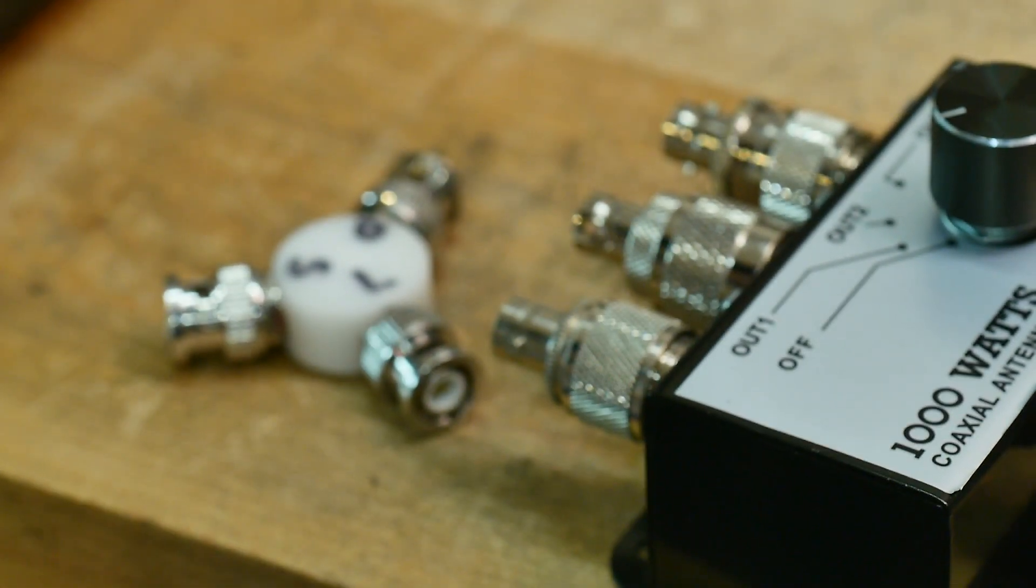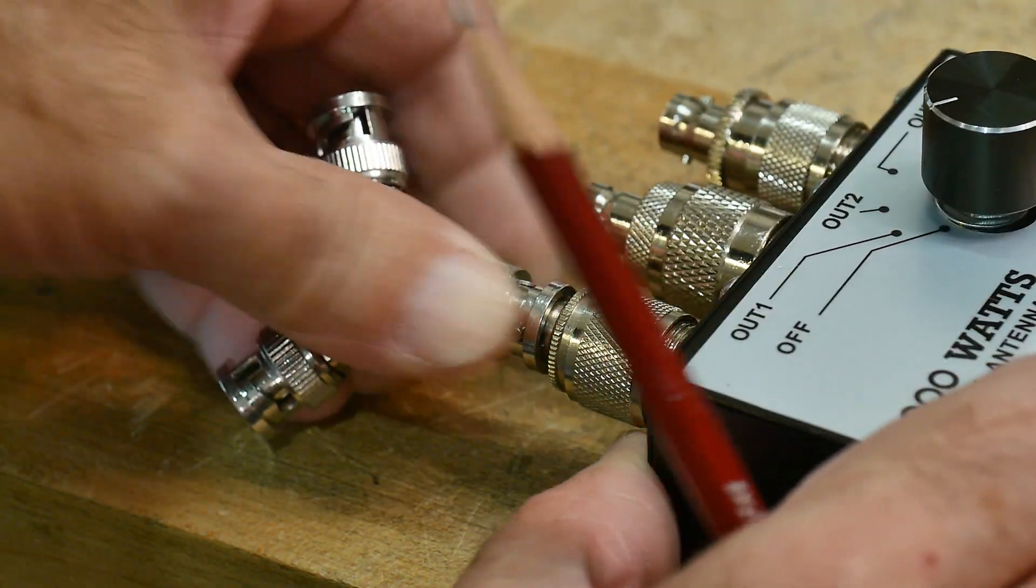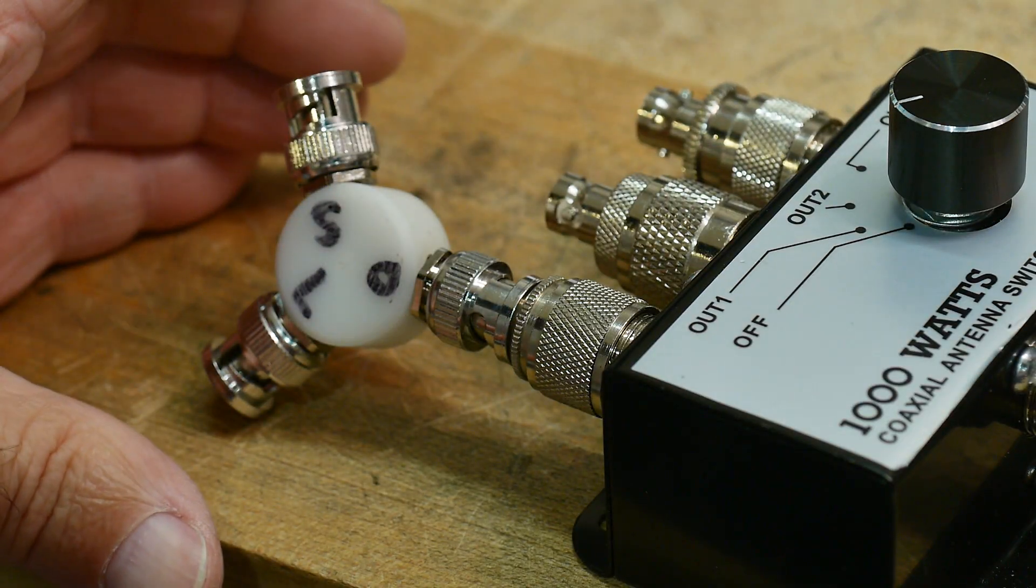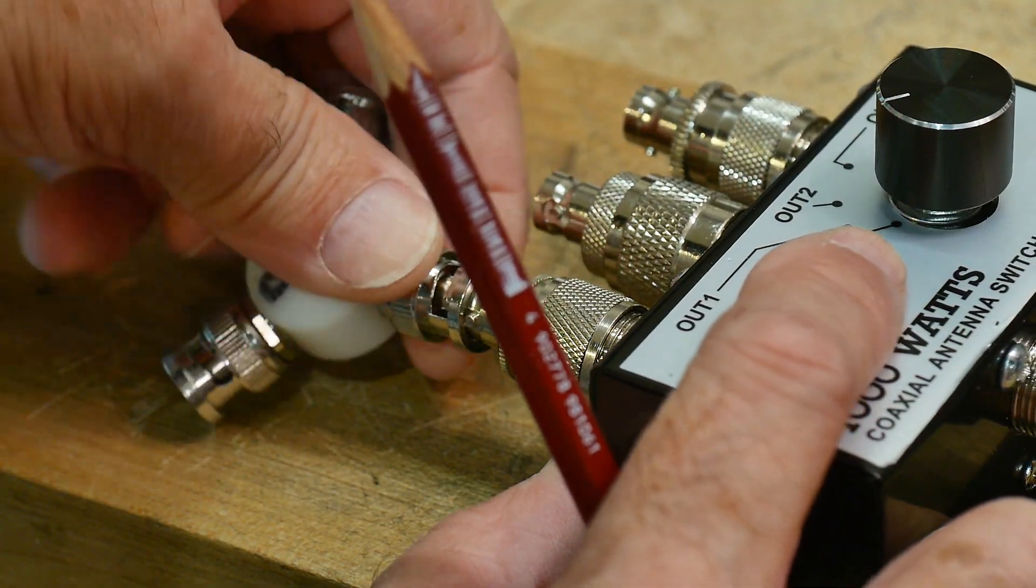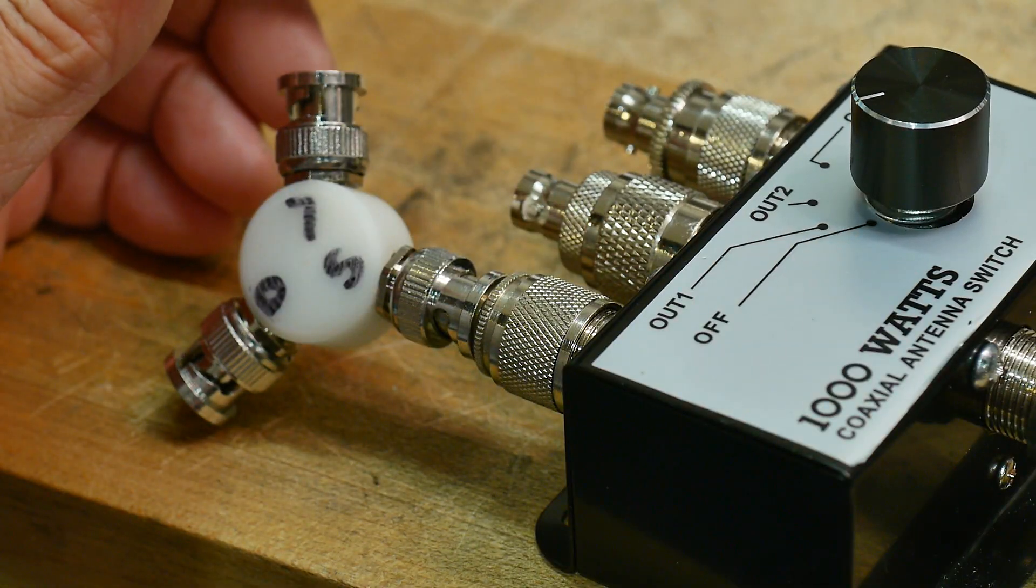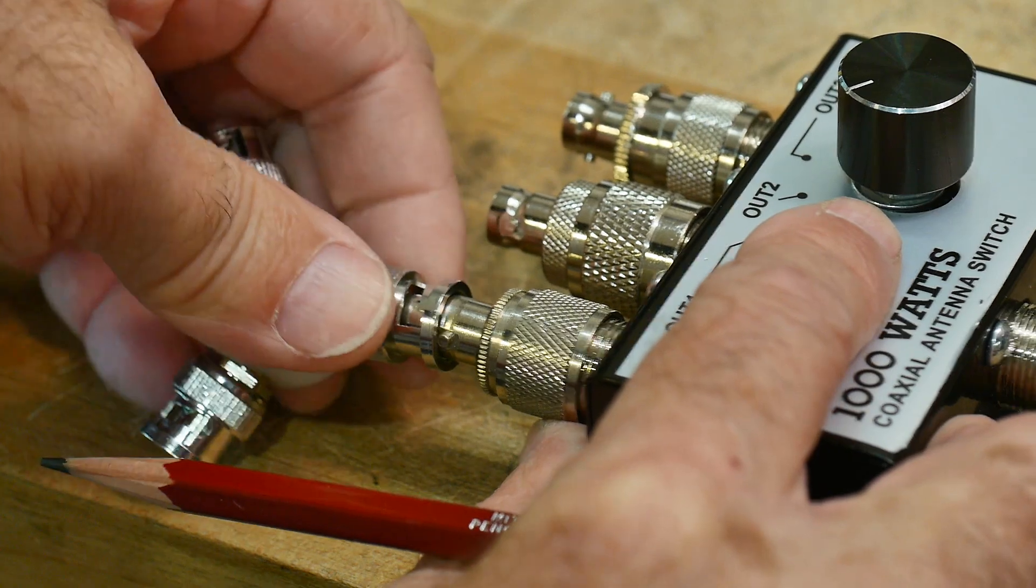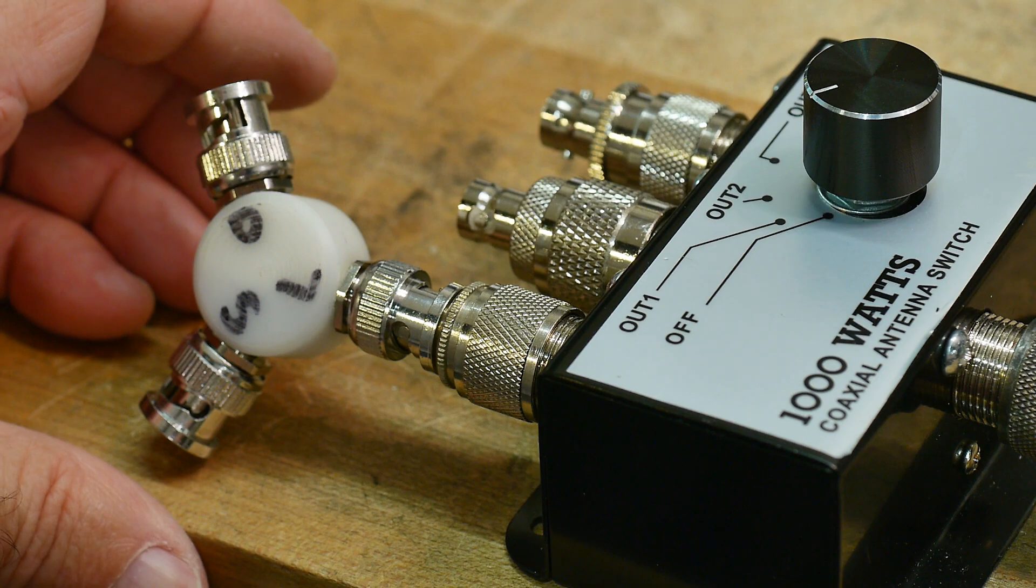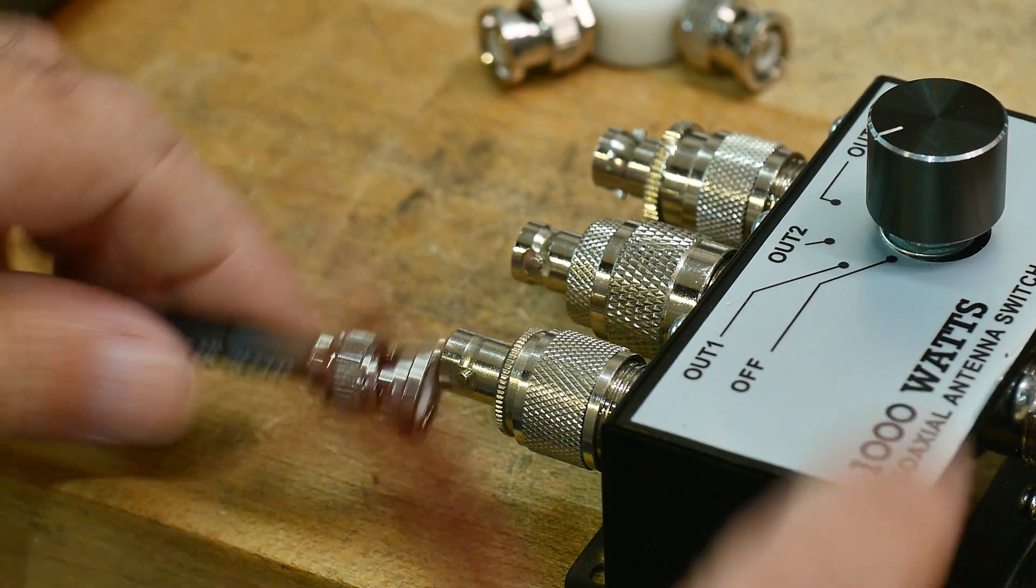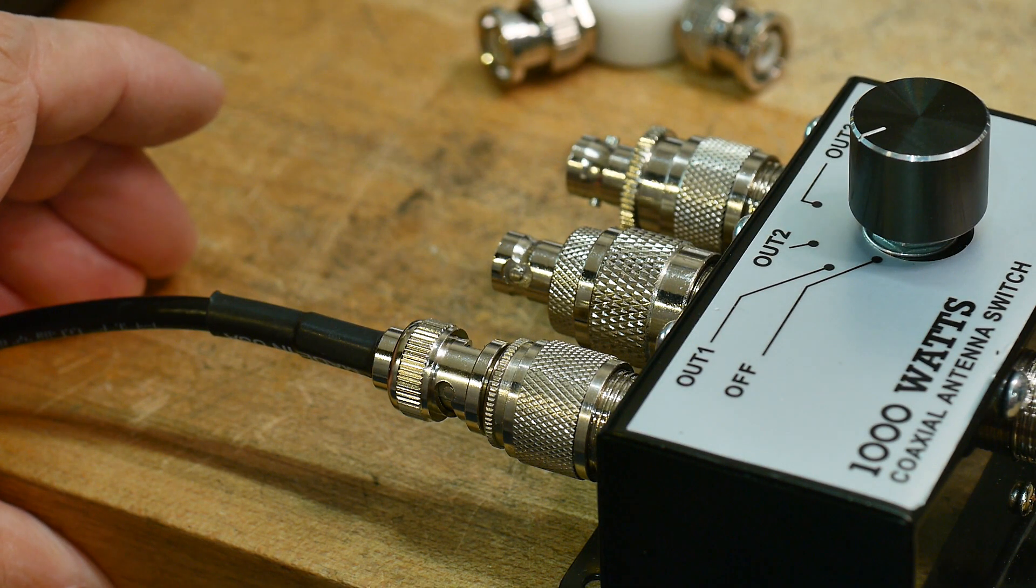Let's see here. I'll use these things here. It's asking for an open. It's asking for a short. Asking for a load. Asking for isolation. And now it's asking for a through. And we're done.